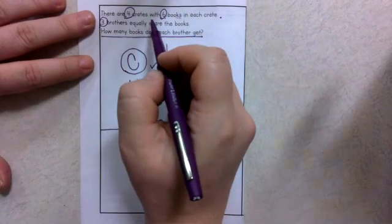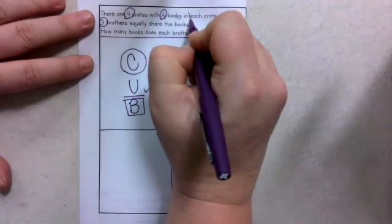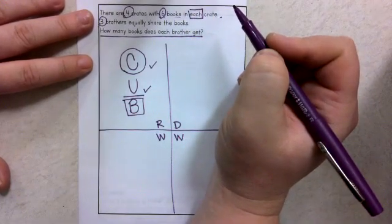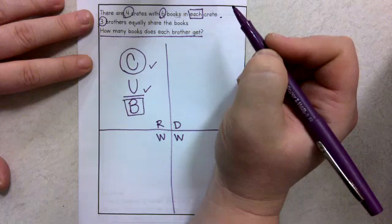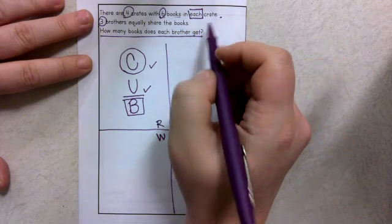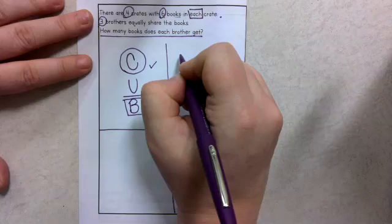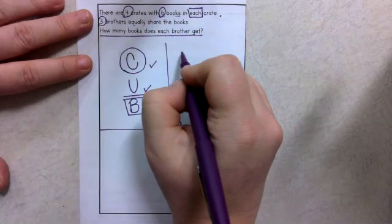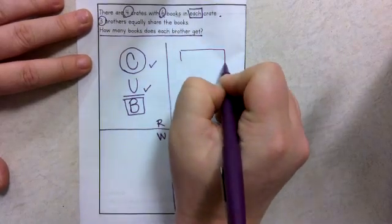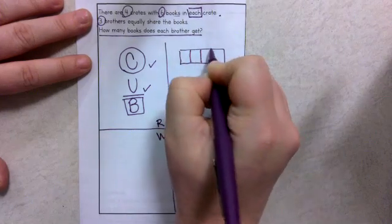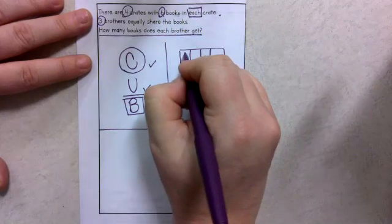Four crates each—I'm going to box, because that signals that I'm probably going to multiply or divide. Each would mean that there are equal groups. At this point, I also ask myself, is there anything I could draw? Are there any boxes I could create? Well, yeah, I could create a bar model that shows my four crates with six books in each crate.